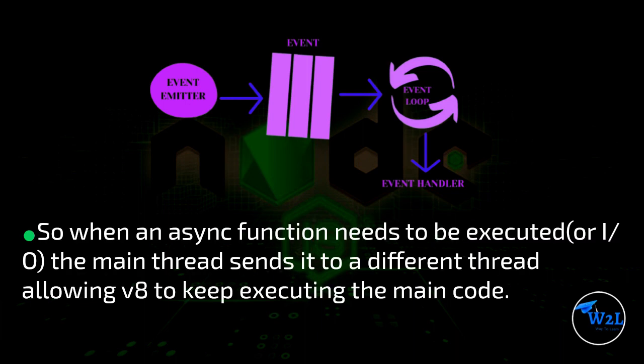When an async function needs to be executed, or I/O, the main thread sends it to a different thread, allowing V8 to keep executing the main code.